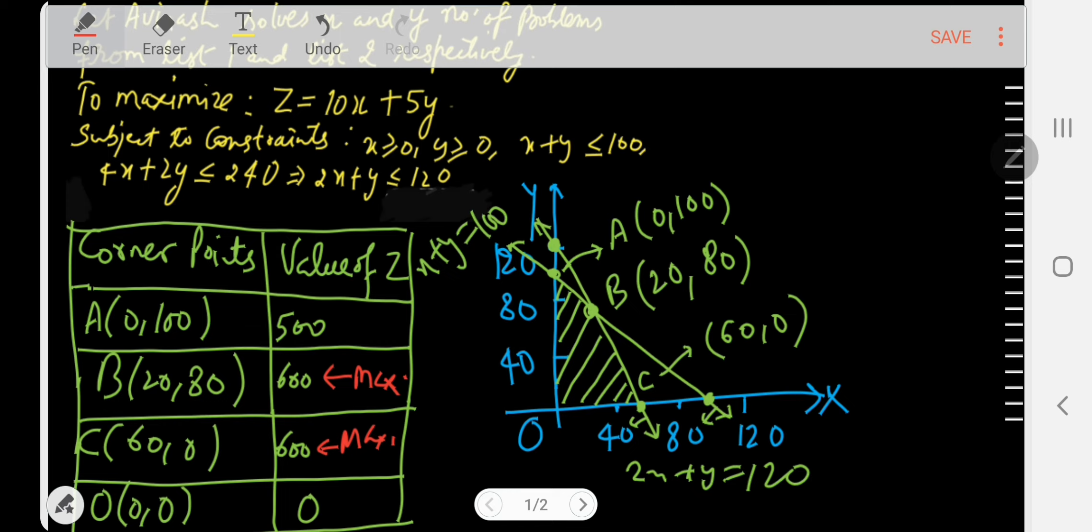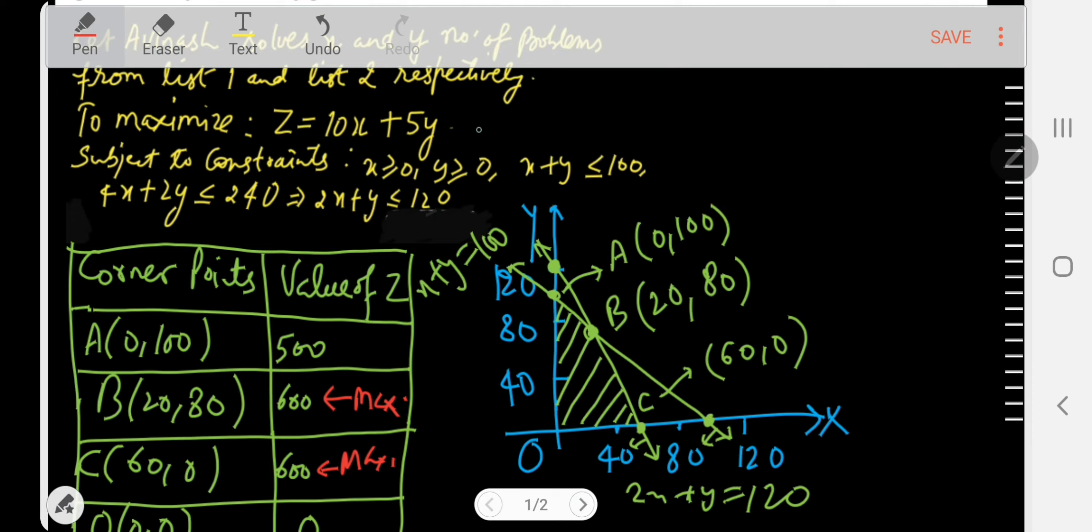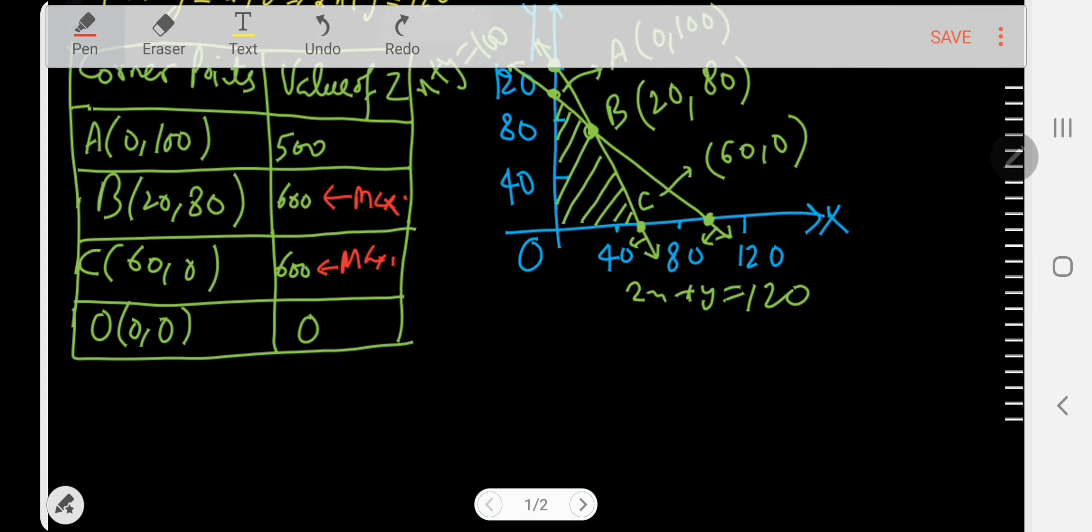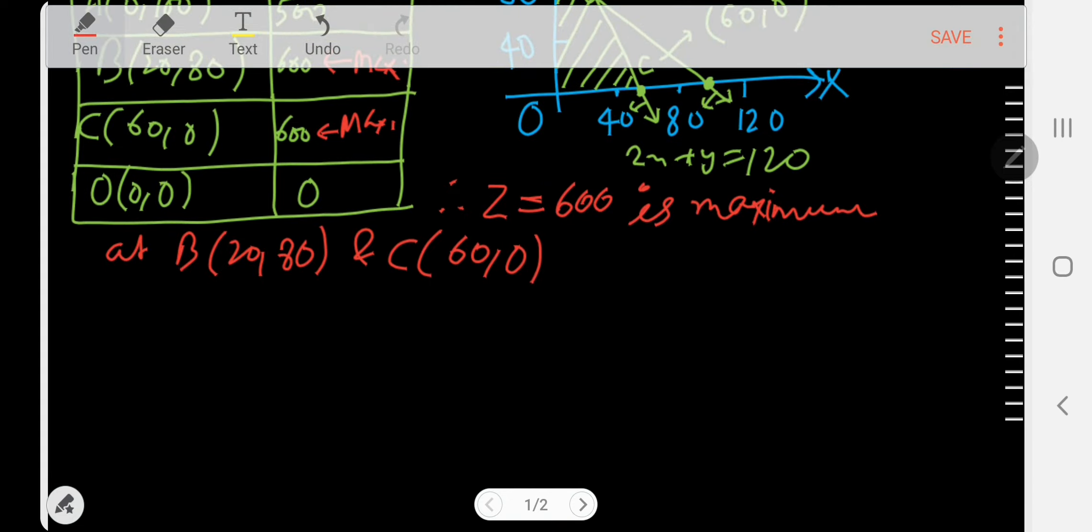Let me mark it with red. You can see these two are the max values of Z. Now what to do? Because we have two different corner points for the same value of Z, and those same values are actually the maximum value of Z, and we have to maximize the optimization function Z. Therefore, Z equal to 600 is maximum.